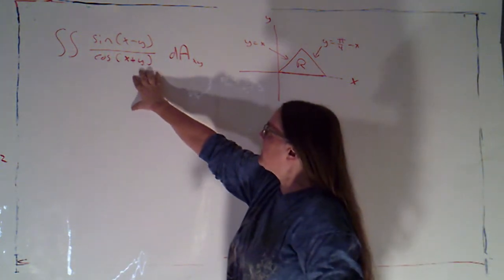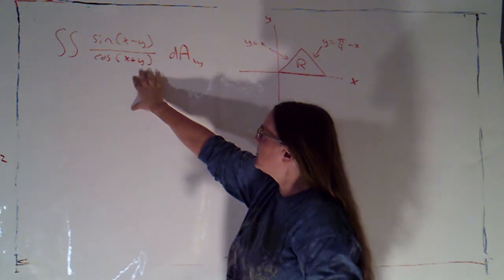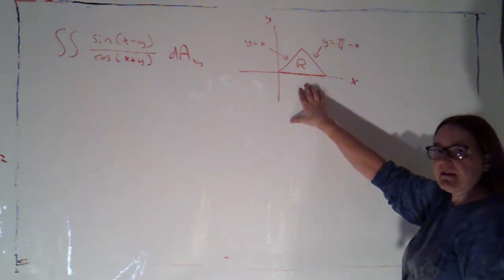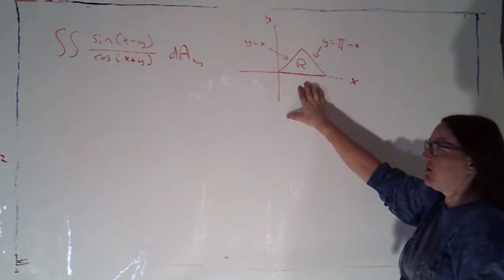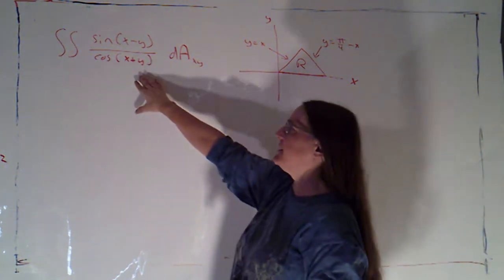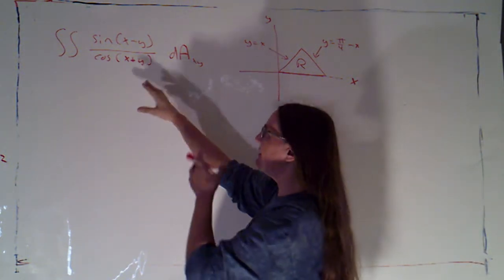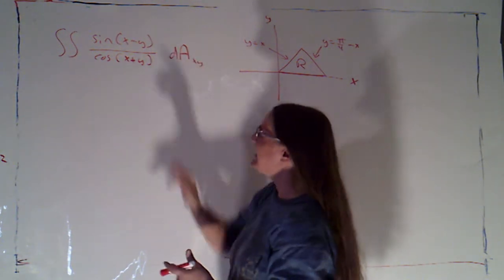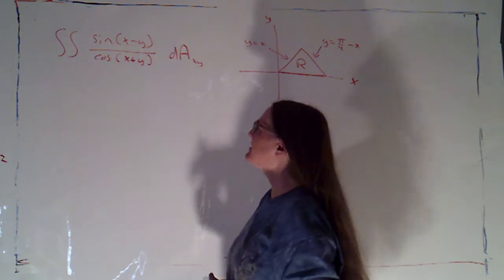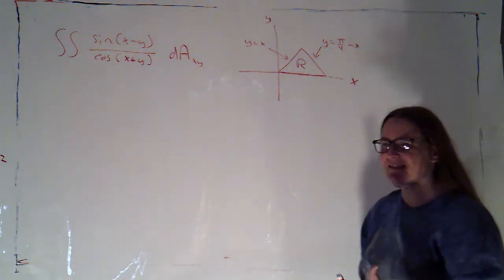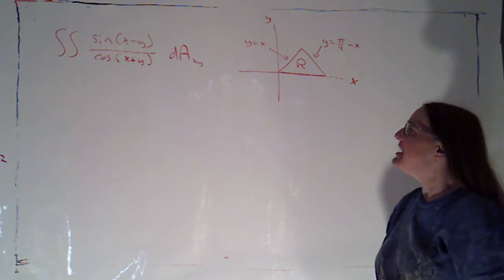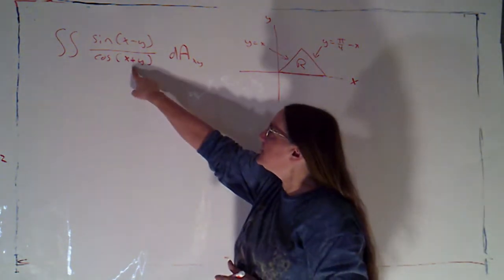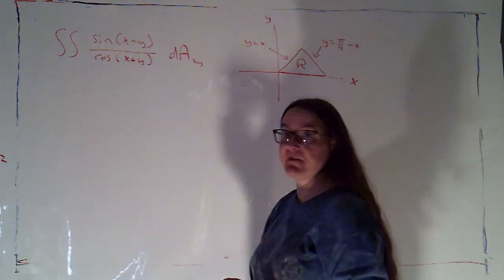So we're trying to integrate this function, sine of x minus y over cosine of x plus y, where this is our region R. In this case, it's not that I don't like the region R — I don't like the integrand, because it just looks like a nightmare. The input to my trig functions is different; I've got two different things plugging into sine and cosine, so I'd really like to try to simplify this. The integrand suggests to me what I want u and v to be.